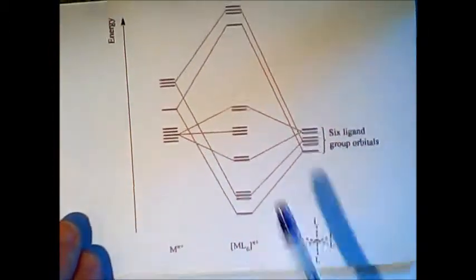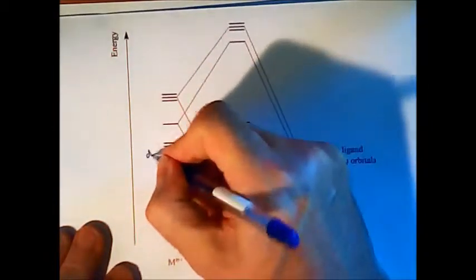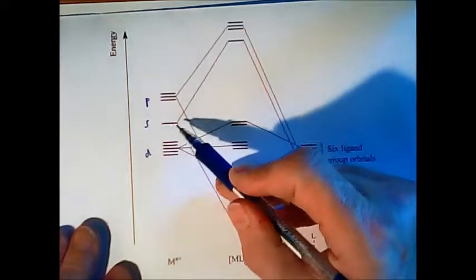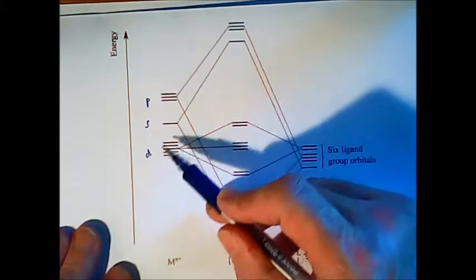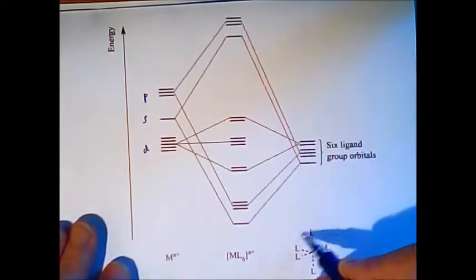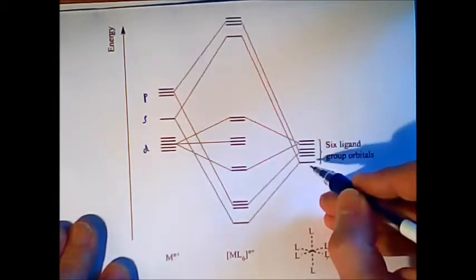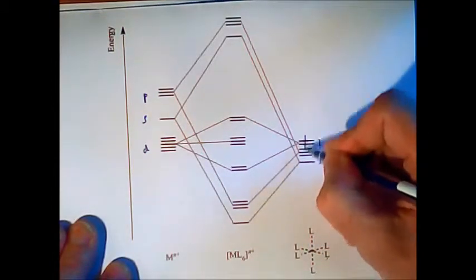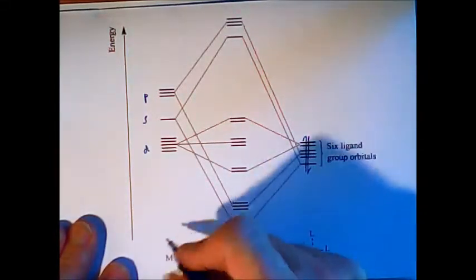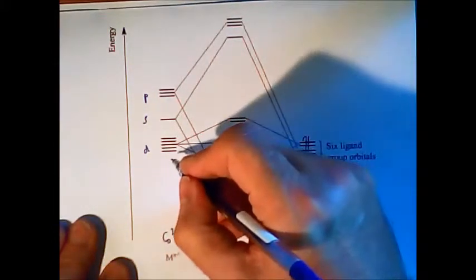So that's the whole MO diagram for the cobalt-3-plus with six ammonia ligand. So the complete MO diagram for an ML-6 complex would look like this. On the left side we have the d electrons of the metal. The s electrons and the p electrons. S and p are empty. Only in the d block we have electrons from the metal. And on the right side we have six ligand group orbitals. We combine the orbitals of the six ligands around the center. We have six group orbitals and all these are full of electrons. Means we have twelve electrons here.